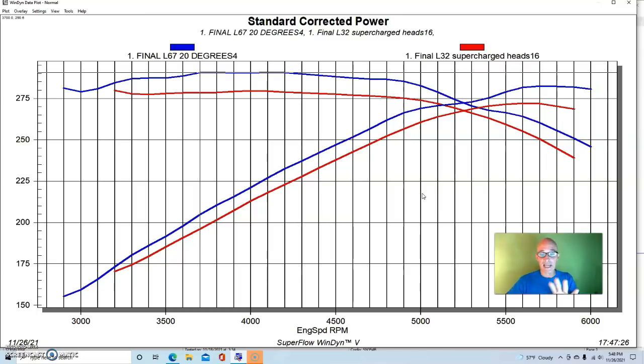So, now let's take a look at what happened. This was run on 91 octane, and interestingly enough, the L32, we ran a couple, we tried a couple of more degrees timing on the L32 than we did on the L67, and despite that, the L67 still made more power. So, now let's take a look at what happened when we stepped up to E85.